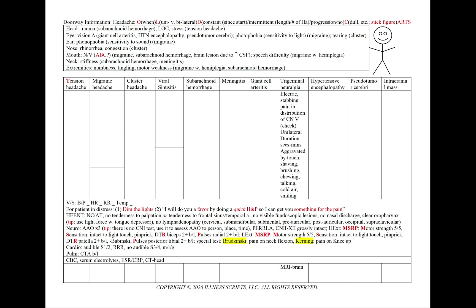In trigeminal neuralgia, we'll see electric stabbing pain in the distribution of the trigeminal nerve — classically the cheek area. It will be unilateral with a duration of seconds to minutes. It can be aggravated by touching, shaving, brushing, chewing, talking, cold air, or even smiling. We'll order an MRI of the brain.